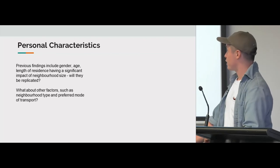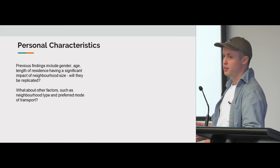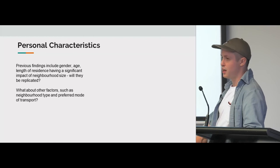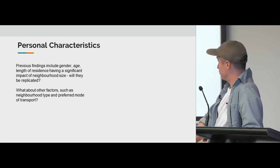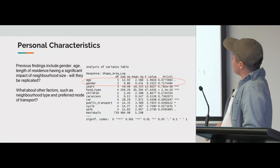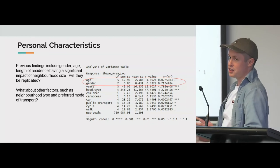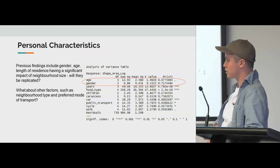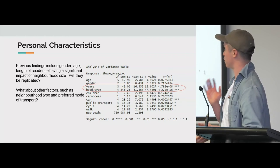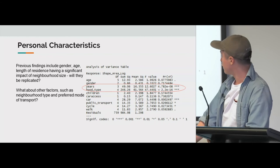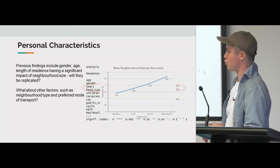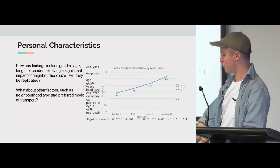Looking at personal characteristics — previous findings have found that gender, age, and length of residence have a significant impact on neighbourhood size. It was interesting to see if these were replicated and if transport mode also impacted it. I performed linear regression. Age and gender both had non-significant values — those findings weren't replicated. However, the number of years you've lived in your neighbourhood had a significant impact, and it's quite a positive relationship: the longer you've lived in your neighbourhood, the larger your neighbourhood size was.